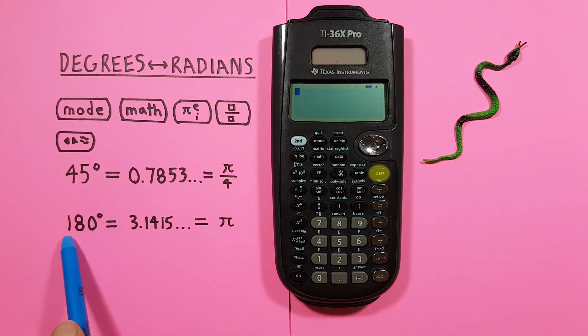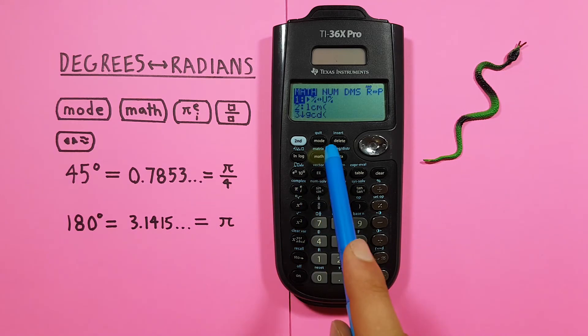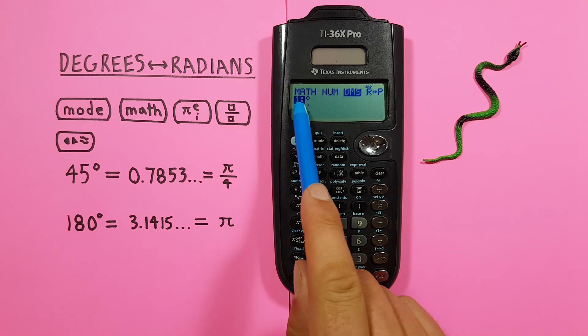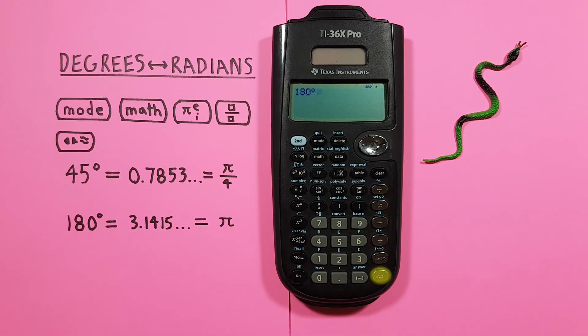And then entering our 180 degrees. Telling our calculator this 180 is degrees by pressing Math. Scrolling across and choosing the degree symbol. There we go.